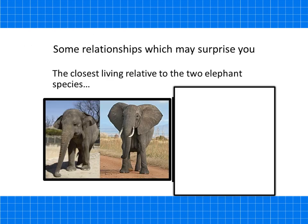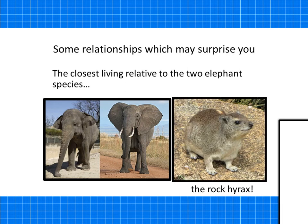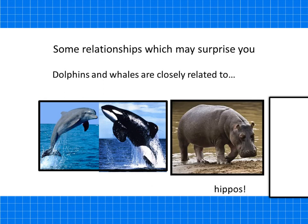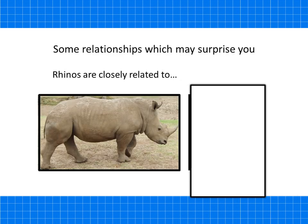Through his research, Woese found some really surprising relationships. The African and Asian elephants' closest relative is the rock hyrax. Whilst they don't look very similar, their genetic DNA is quite similar — they both have tusks growing from their incisor teeth and share flattened, hoof-like nails on the tips of their toes. Dolphins and whales are closely related but are particularly related to hippos. And rhinos are closely related to horses.